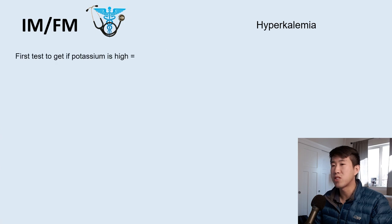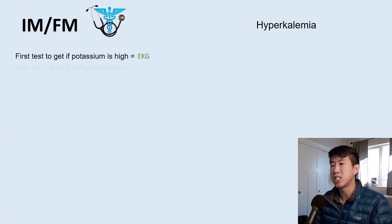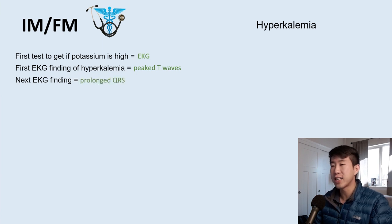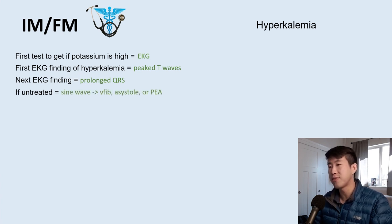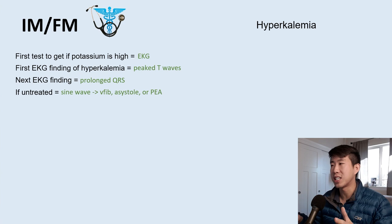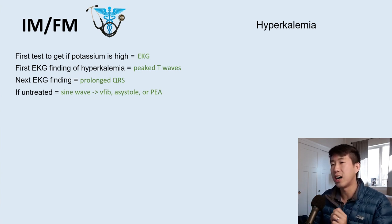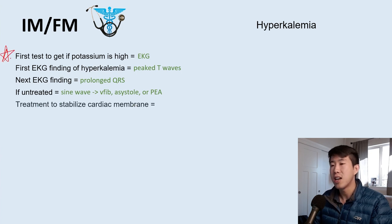Hyperkalemia: the first test to get is an EKG. First EKG finding is peaked T waves; next is widened or prolonged QRS; if untreated, a sine wave pattern develops, progressing to ventricular fibrillation, asystole, or pulseless electrical activity — the patient will die. We check an EKG to assess how much the high potassium is impacting cardiac conduction.